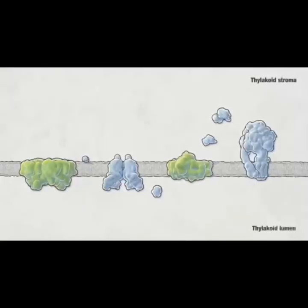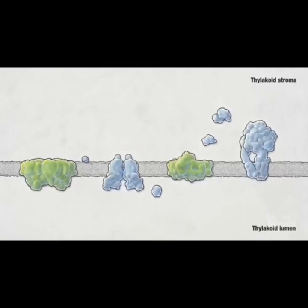The main purpose of light reactions is to generate organic energy molecules such as ATP and NADPH, which are needed in subsequent dark reactions. The thylakoid membranes contain specialized molecules that work together to perform the light reactions. Light is absorbed by protein-pigment complexes called photosystems.